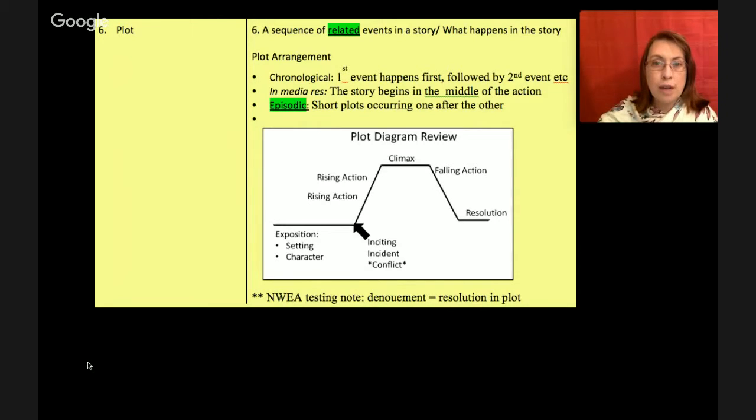And the last type here is called Episodic. And these are short plots occurring one after the other. This is different than a short story or a sequel. This is within the same story. A problem happens, it's solved, which leads to another problem, which is also solved, which leads to another problem, which is also solved. So they're like short episodes, but they all tie together. Looking at the plot diagram, I'm hoping that this looks familiar to you, though I've had students the last two years tell me they've never seen a plot diagram before, which is very concerning.